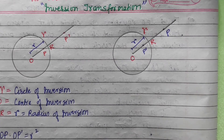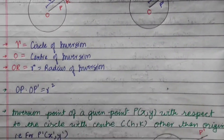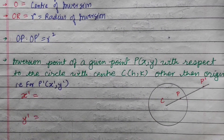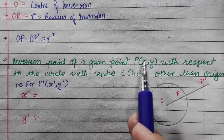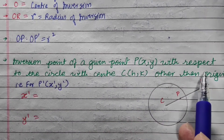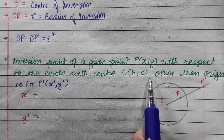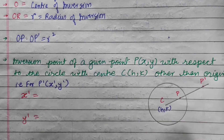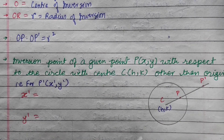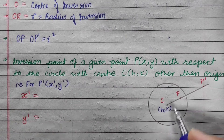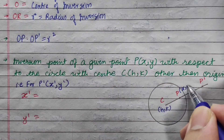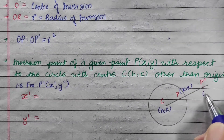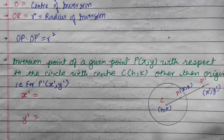Now let's go to the formula. The inversion point of a given point P with respect to the circle with center C — when the center is the origin, and when the center is other than the origin. The given point P has coordinates x, y.